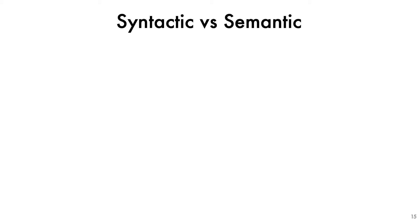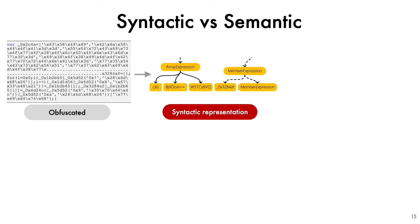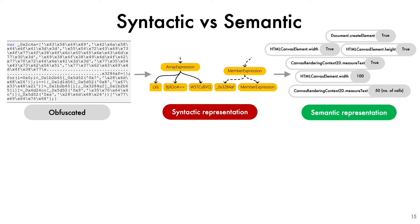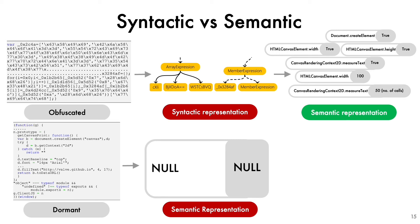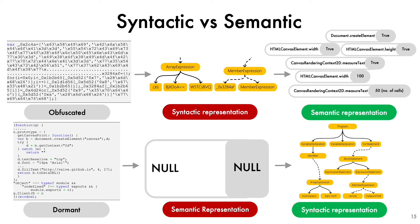We use both syntactic and semantic representation because they provide complementary benefits. In the case of obfuscated scripts, syntactic representation would fail because it relies on the script text to interpret intent. On the other hand, semantic representation relies on script execution and is agnostic to any obfuscation or minification techniques. Similarly, when scripts require some user action or browser events to trigger, semantic representation would fail as there is no execution. In that case, syntactic representation only requires the script text and would be able to create its tree representation to interpret its meaning.